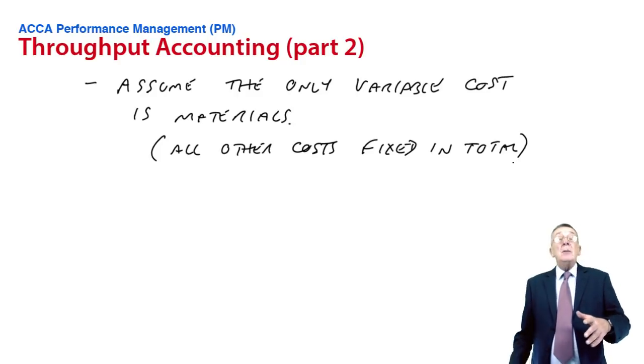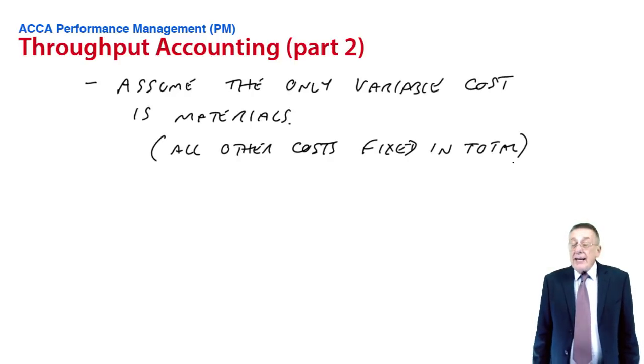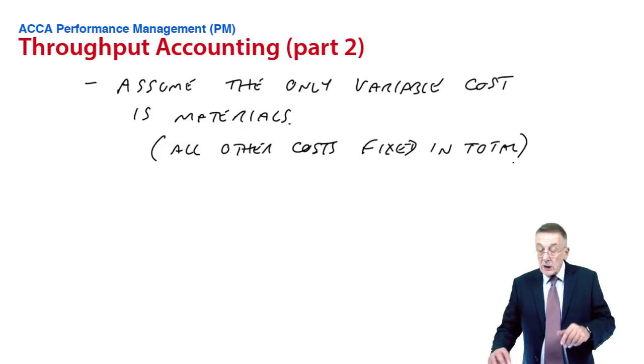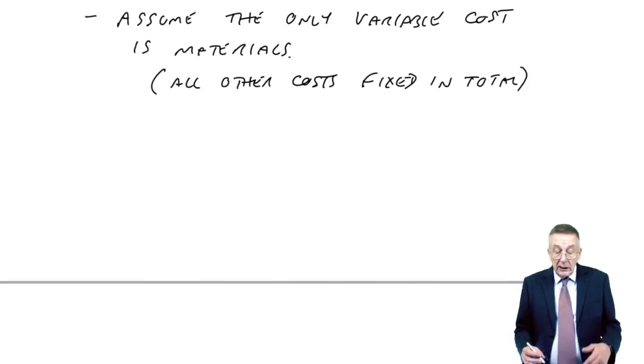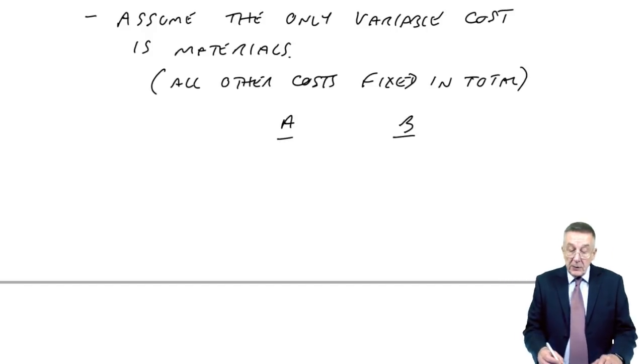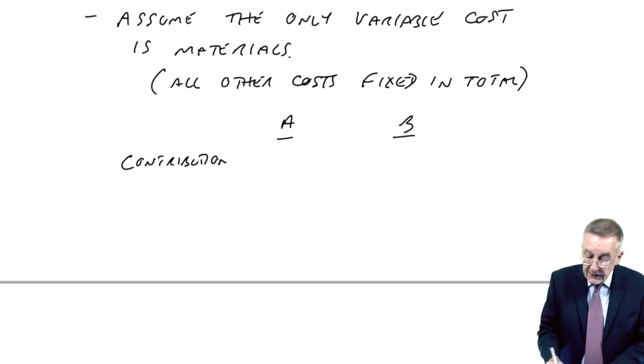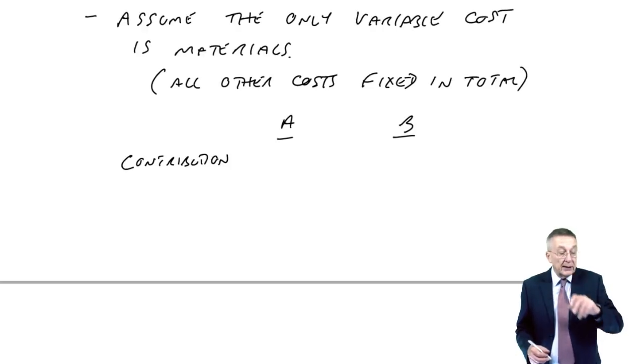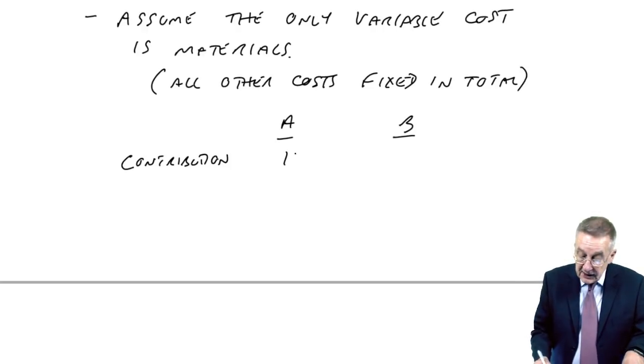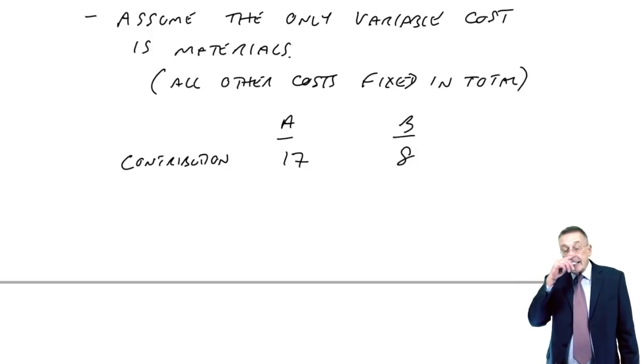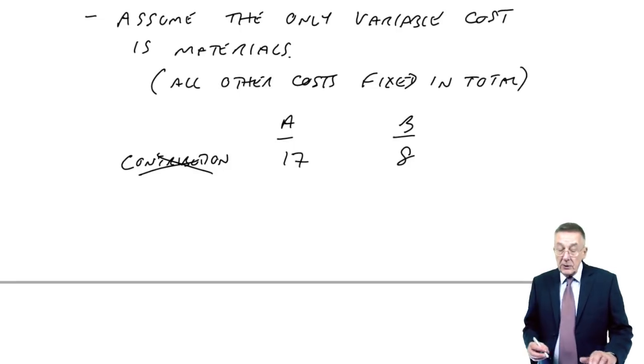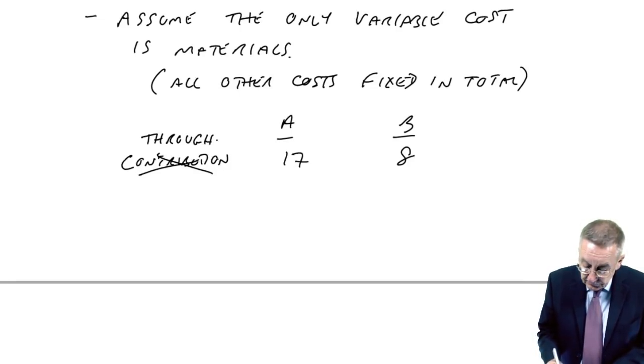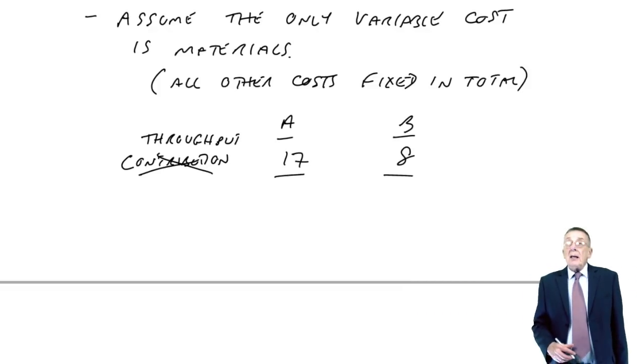And for similar reasons, so do all the variable costs apart from materials. Because materials, clearly, if you produce less, you need less. If you produce more, you need more. And so in throughput accounting, we assume that the only truly variable cost is materials. That all the other costs are effectively fixed. And on that assumption, we do exactly what we did before, but this time, the only variable cost is materials.